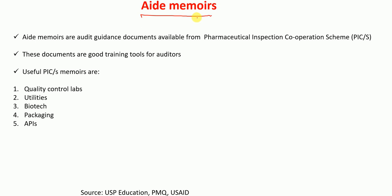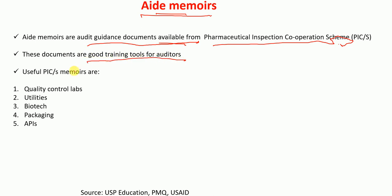The next point is aid memoirs. Aid memoirs are audit guidance documents available from the Pharmaceutical Inspection Cooperation Scheme, or simply PICS. These documents are good training tools for auditors. The most useful PICS aid memoirs cover quality control labs, utilities, biotech, packaging, and APIs.